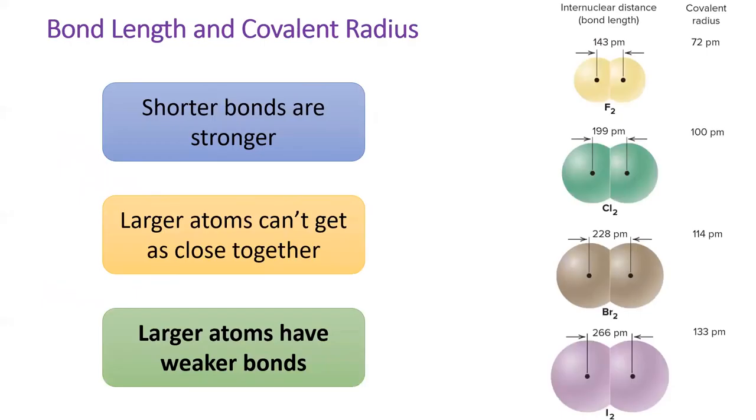Lastly, since shorter bonds are stronger and large atoms cannot get as close together as small atoms, larger atoms tend to have weaker covalent bonds.